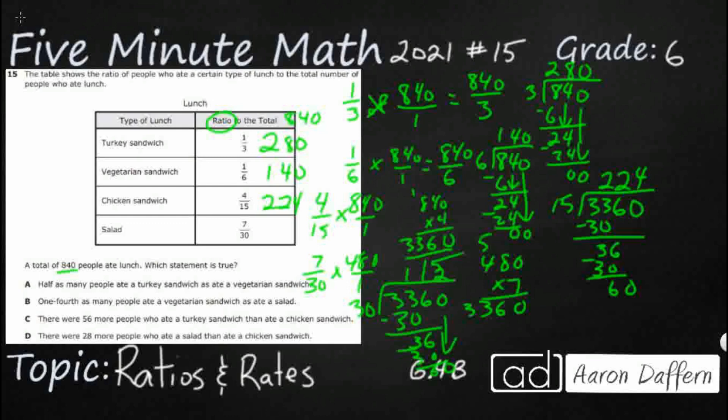So good gracious, look at all of that work we did. Now we're ready to look at our statements at the bottom. 'Half as many people ate turkey as ate a vegetarian,' actually, that's incorrect. Twice as many people, if you would have said twice, you would have been fine. Your turkey is 280, your vegetarian is 140. So just wrong number.